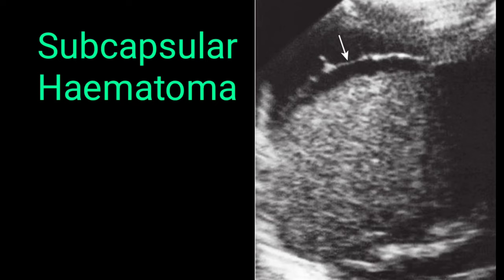On the report, mention that the spleen appears heterogeneous. Since the patient will have a trauma history and has been brought to accident and emergency, there is no doubt this would be hematoma. Mention that the spleen appears heterogeneous, there is subcapsular hematoma, give the size, and if possible provide the volume on your report.